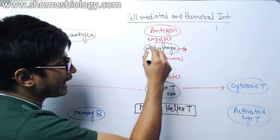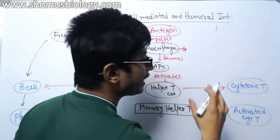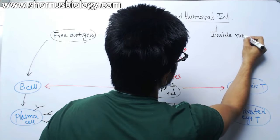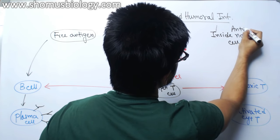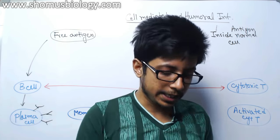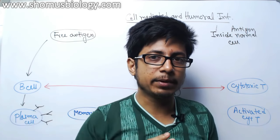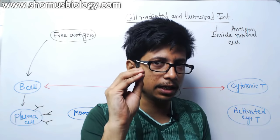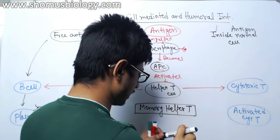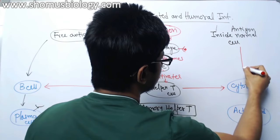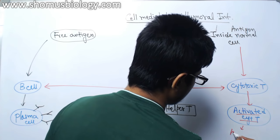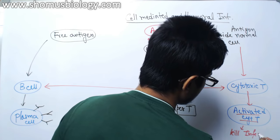On the other hand, if the antigen is inside one of our body cells — antigen inside a normal cell — then that normal cell starts to change its behavior. It will modify the type of phospholipids present on its surface, rearrange its components, and send signals from outside. When the signal is received by cytotoxic T cells, the cytotoxic T cells get activated and will kill the infected cell.